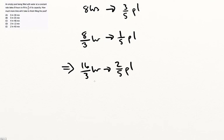That's two fifths of a pool. And lo and behold, 16 over three is five and one third hours. Please don't at this point choose the 30 minutes. It's five hours, 20 minutes, five and one third hours.